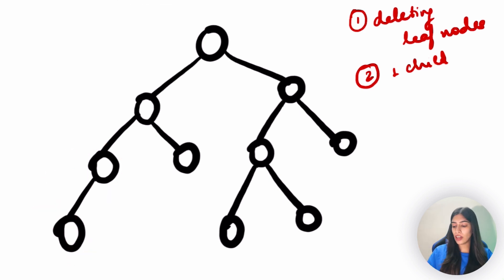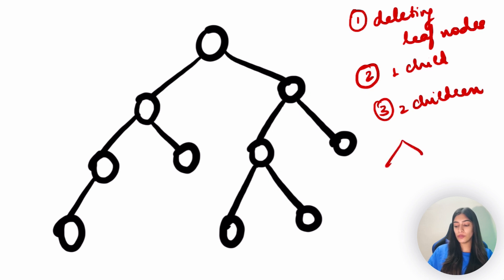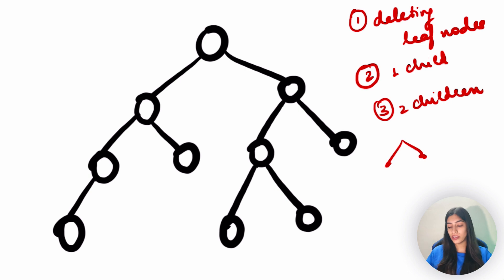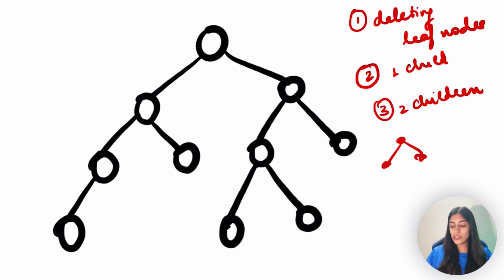The complexity actually comes when we are deleting a node with two children - children on both left and right sides. In a BST, the number of children possible is zero, one, or two. We've talked about zero children and one child. Now let's talk about two children. It's not necessary that this is the simplest tree - they can have children below also.